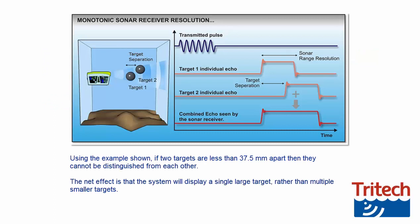Using the example shown, if two targets are less than 37.5 millimeters apart, then they cannot be distinguished from each other. The net effect is that the system will display a single large target, rather than multiple smaller targets.